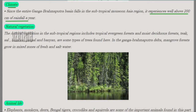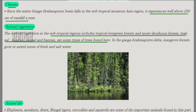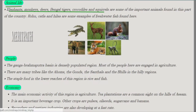The Ganga-Brahmaputra Basin falls in the subtropical monsoon climate and experiences about 200 centimeters of rainfall per year. Natural vegetation in this subtropical region includes tropical evergreen forest and moist deciduous forest. Trees like teak, sal, bamboo, and deodar are found here. Mangrove forests also grow in fresh and saltwater mixed zones. This is an image of mangrove forest.